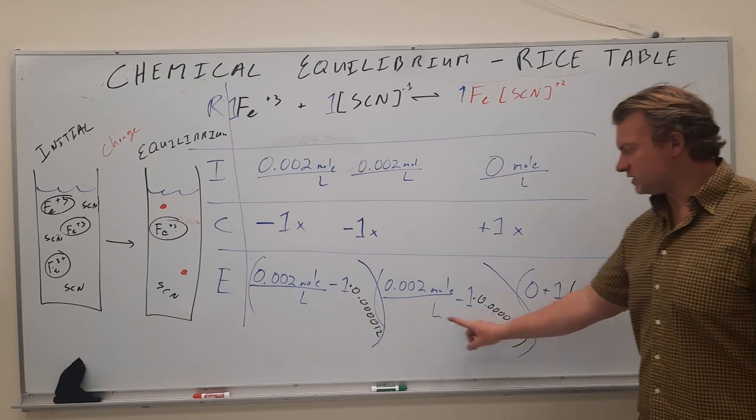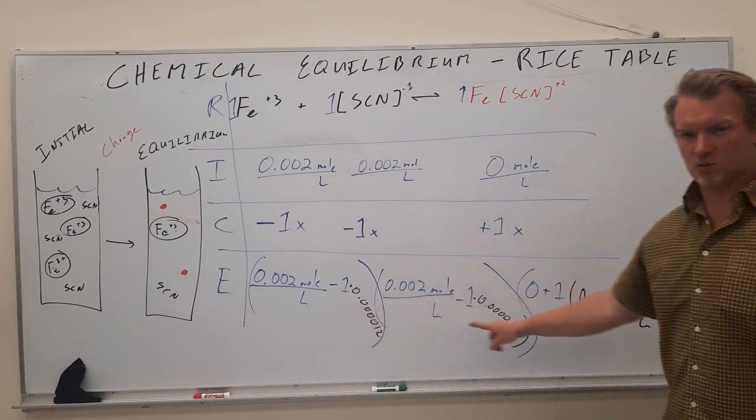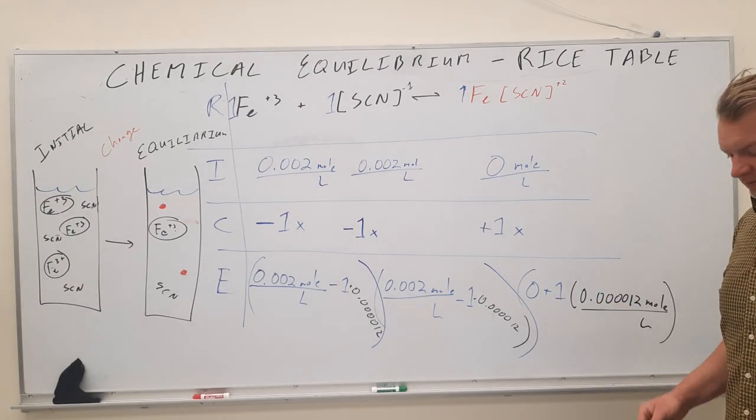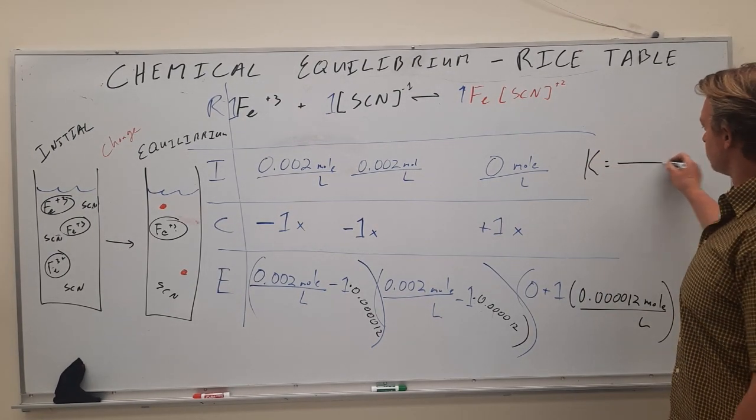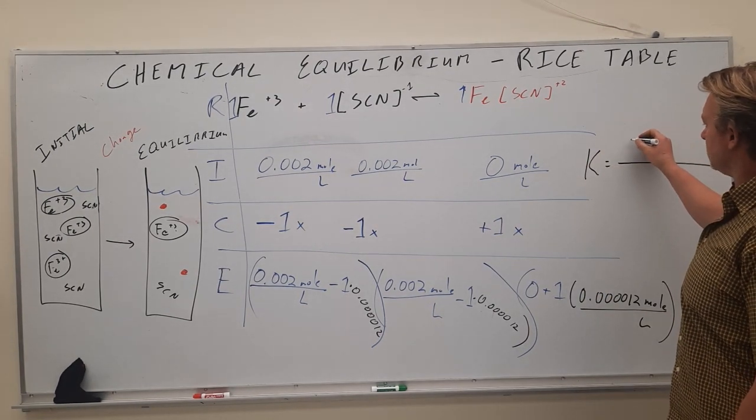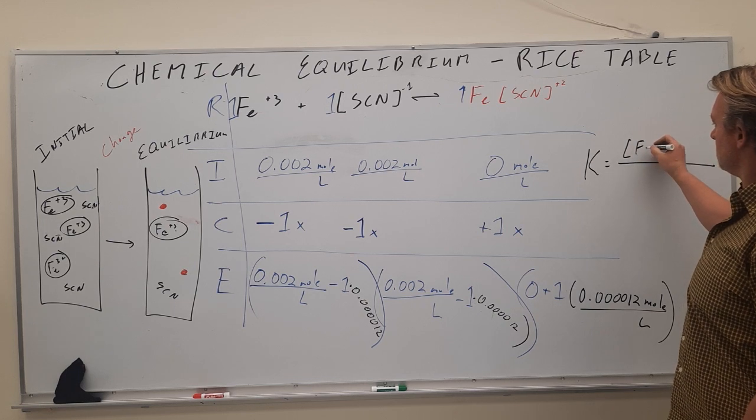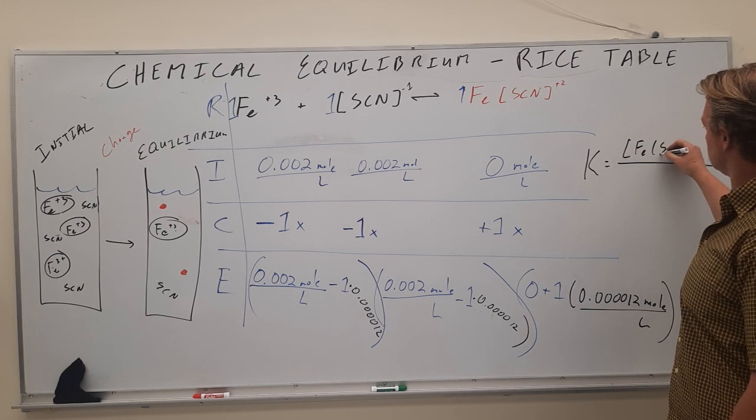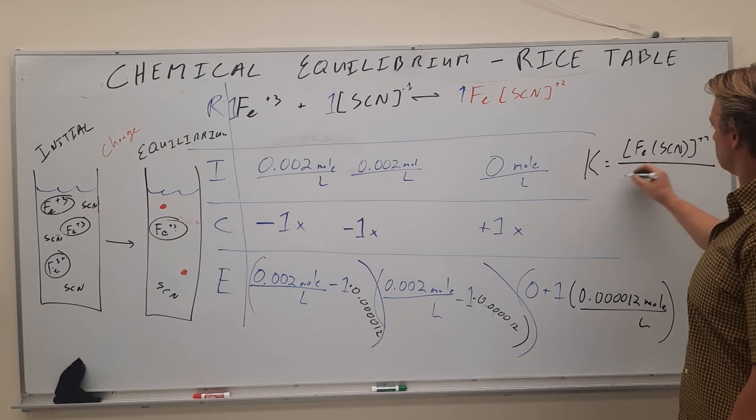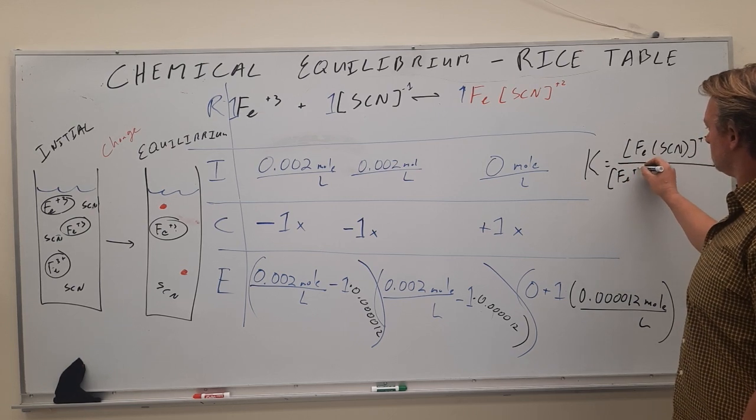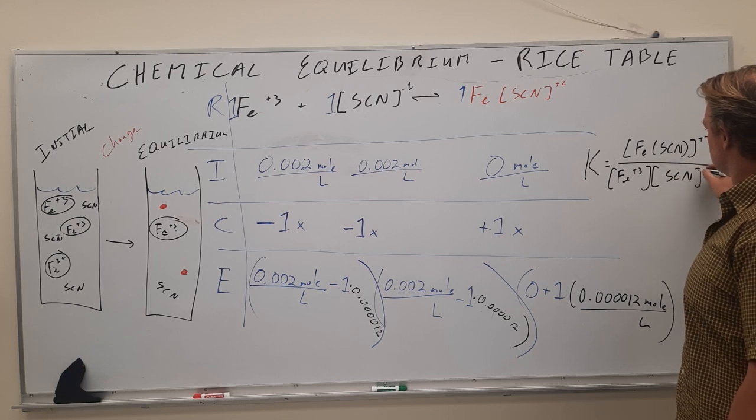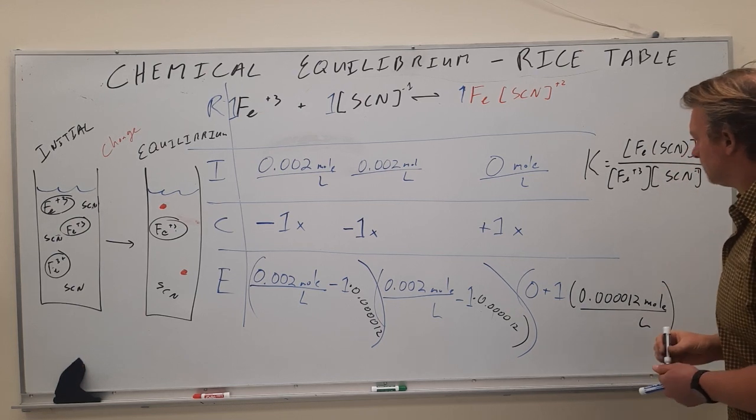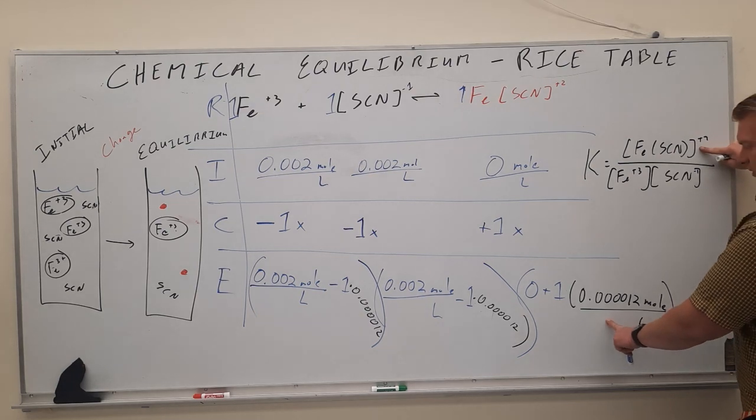Once we have all of these numbers plugged in and evaluated the equilibrium line here, you go back into your capital K, you plug in those numbers, that equilibrium. So like this number, the product, I don't have this written in red right now.